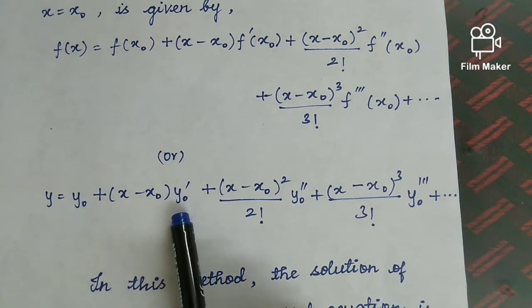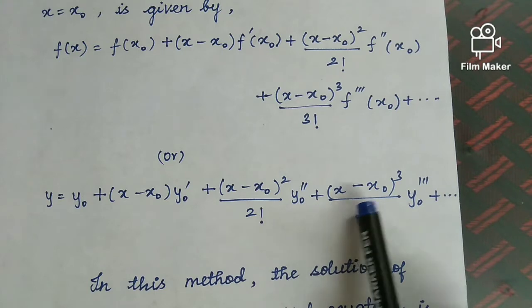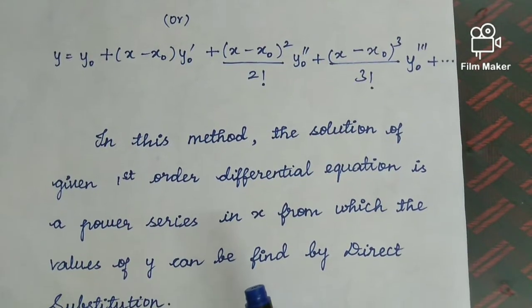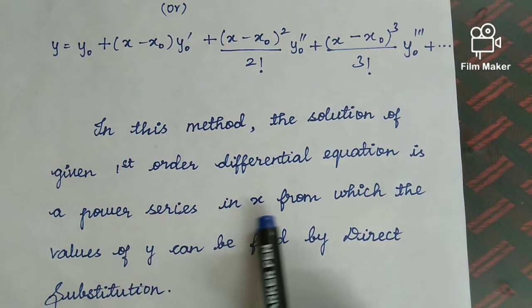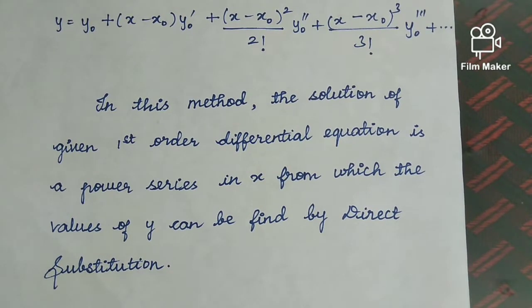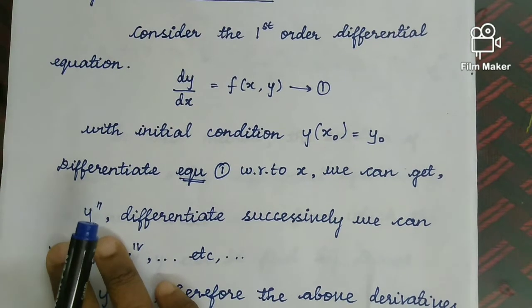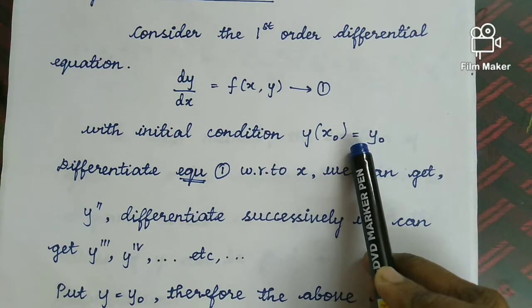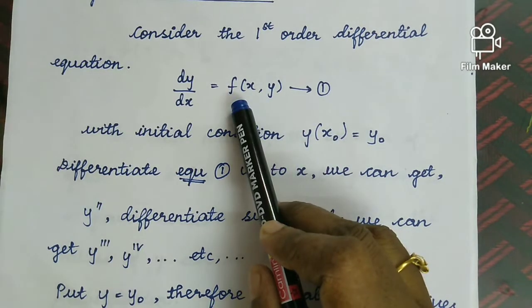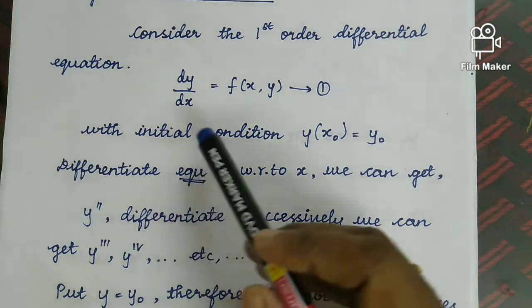In this method, the solution of the given first order differential equation is a power series in x, from which the values of y can be found by direct substitution. This is the Taylor series method. Given the differential equation with the initial condition, with x0 equal to y0, we use the differential equation and find the solution. The solution is y equal to some terms of x, expressed in powers of x. If we substitute the required point, we will get the value of y as the answer.